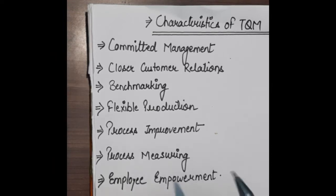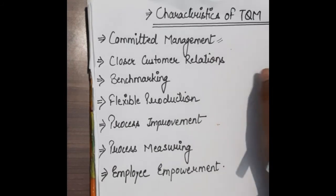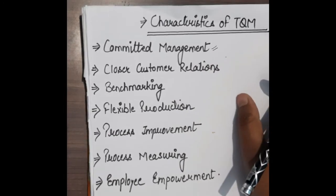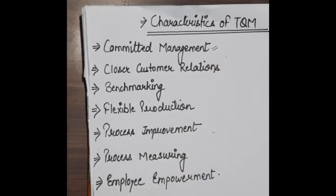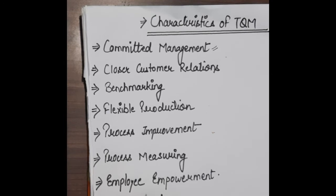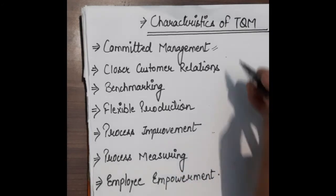The first characteristic is committed management. When we talk about TQM, our organization has three levels: it is a top level, it is a middle level, and it is a lower level. All three levels are committed to the organization and committed towards quality.